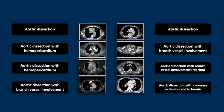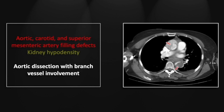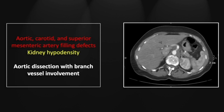Our next case is another aortic dissection with branch vessel involvement. You can see it at the thoracic inlet where the right common carotid is significantly narrowed with a hypodense thrombus visible, consistent with the dissection. The dissection is not subtle in both the ascending and descending aorta. The branch vessel involvement is a little more subtle — there is narrowing of the celiac trunk related to the extended dissection at the diaphragmatic hiatus. Note also a small wedge-shaped cortical hypodensity in the left kidney consistent with involvement of the left renal artery.